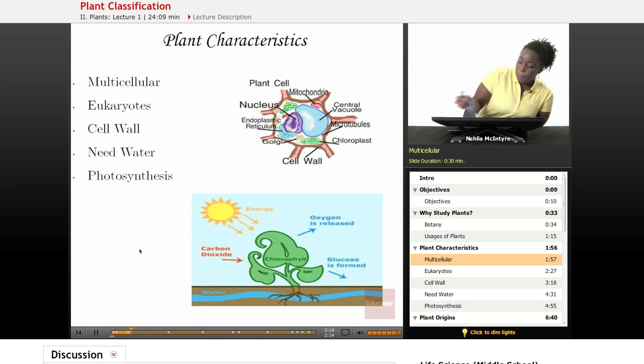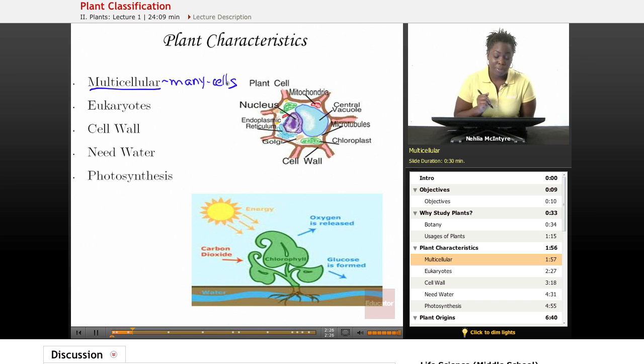First of all, all plants are what we call multicellular. That means they're made of many cells, and those cells come together to perform the plant functions.